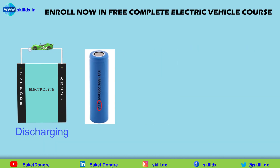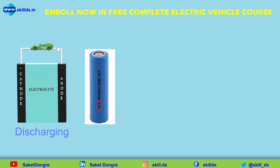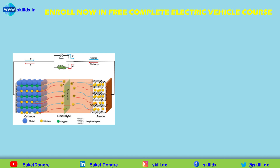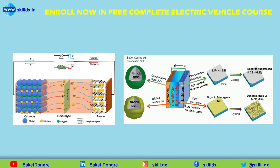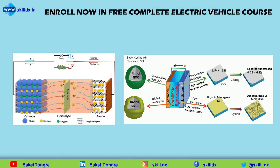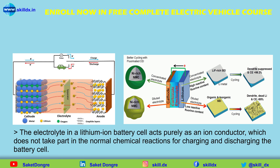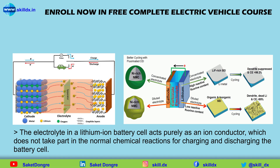An aqueous solution would not work for a lithium-ion battery cell because these typically have an overall voltage much higher than 2 volts — usually higher than 3 volts as well. So instead, lithium-ion battery cells use non-aqueous electrolytes built using organic solvents plus a lithium-based salt dissolved into that solvent. The electrolyte acts purely as an ion conductor and does not take part in the normal chemical reactions for charging and discharging the battery cell.